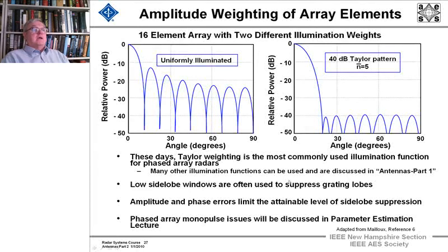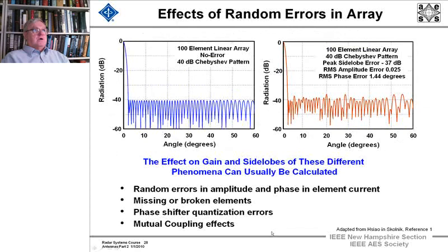And in part one, I discussed illumination functions in general a lot. The low side lobe windows are often used to suppress grating lobes, and amplitude and phase errors will ultimately limit the attainable level of side lobe suppression. And phased array monopulse techniques that we'll discuss in the parameter estimation lecture, I want to note.